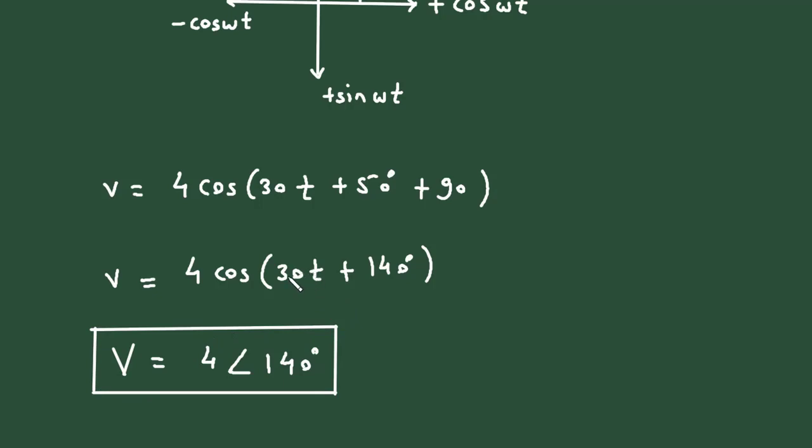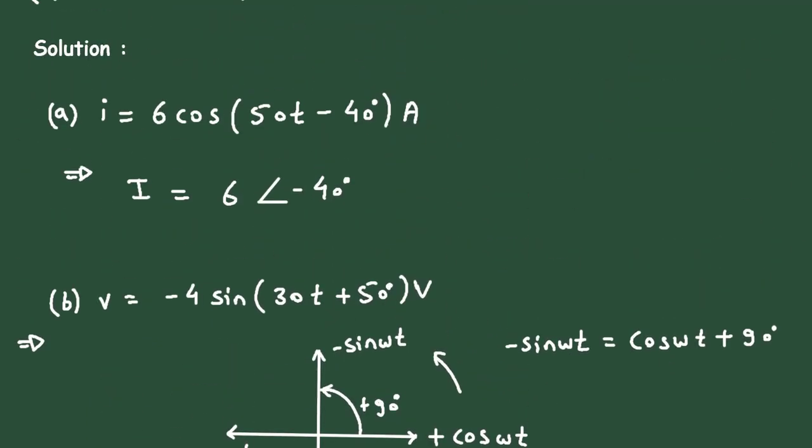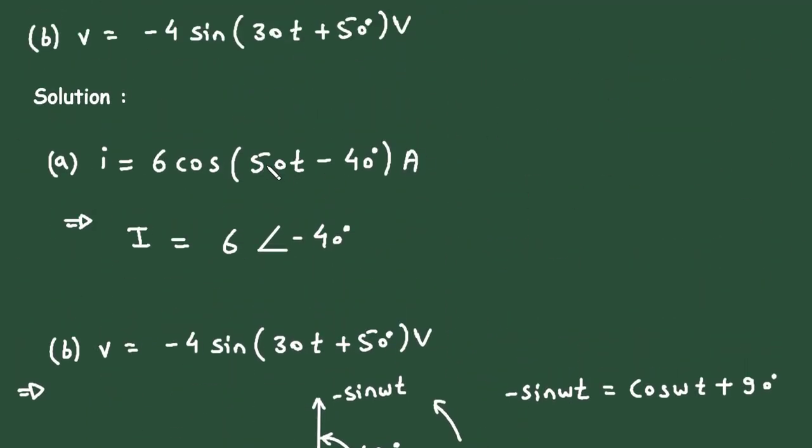Here the value of omega is 30, and here the value of omega is 50 radians per second.